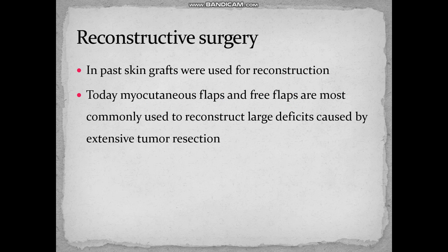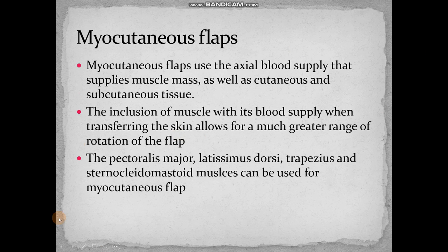Myocutaneous flaps are used to reconstruct the deficits caused by the resection. Myocutaneous flap means we are using axial blood supply — flaps which have axial blood supply applied to the muscle mass as well as the cutaneous and subcutaneous tissue. The inclusion of muscle with its blood supply when transferring the skin allows for a much greater range of rotation of the flap. Pectoralis major, latissimus dorsi, trapezius, and sternocleidomastoid muscles can be used as myocutaneous flaps.